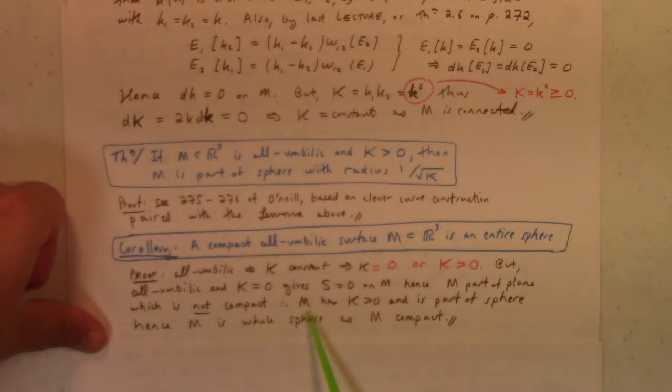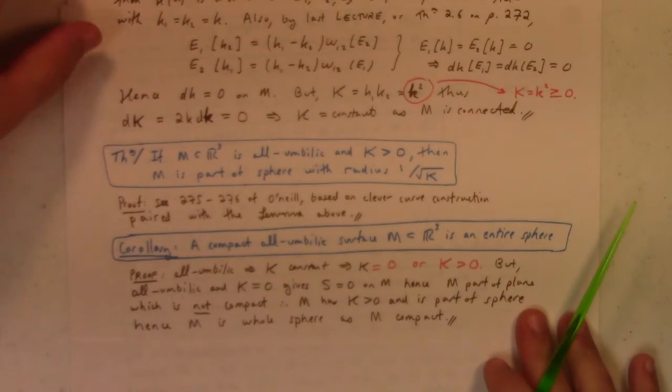So, let's see here. Therefore, M has a Gaussian curvature positive and is part of a sphere. But that means M has to be the whole sphere as M is compact.